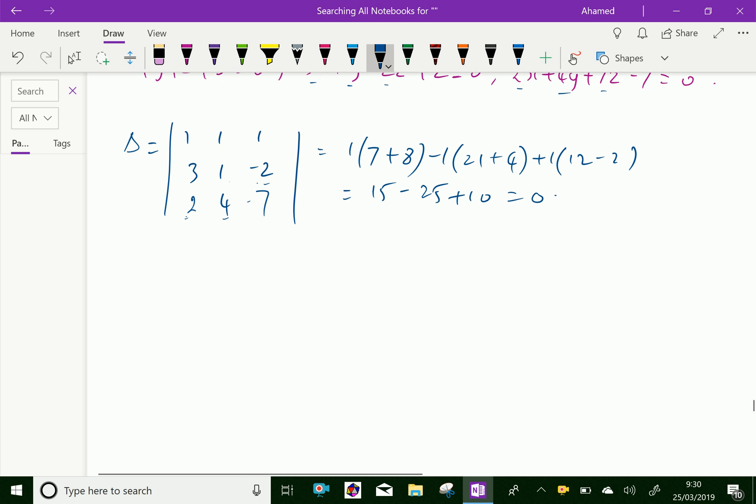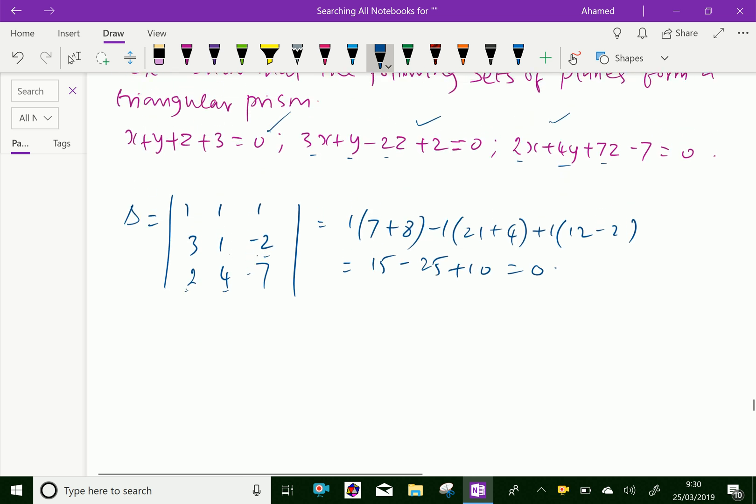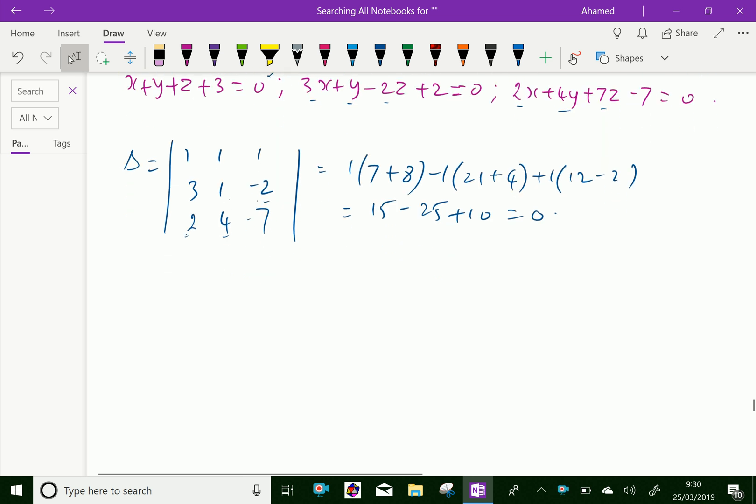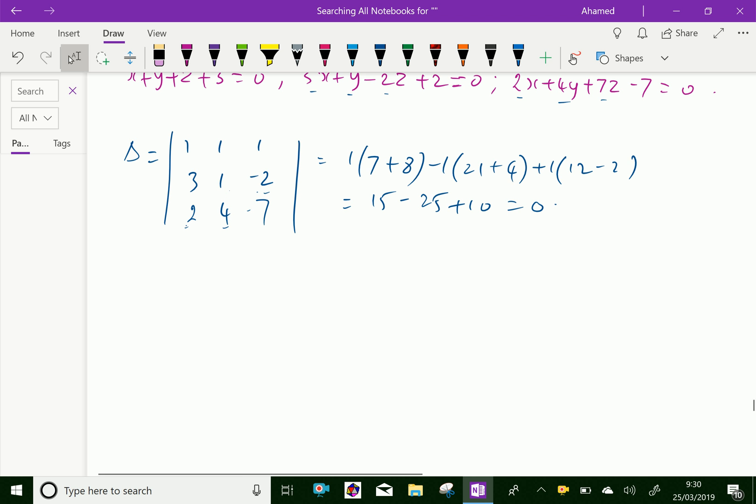And this is the condition for these three planes form a triangular prism. But we have to check with at least delta 1, delta 2, or delta 3.